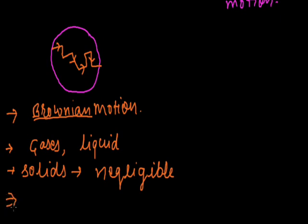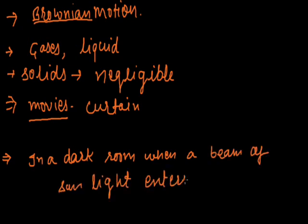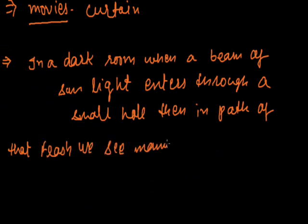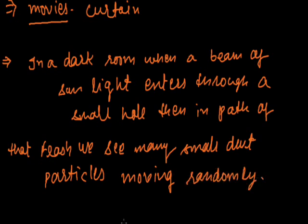I will tell you another example of Brownian motion. When you go to movies, you see there is a beam of light striking on the curtain. In the path of this beam you see many particles moving here and there. This motion is nothing but Brownian motion. Likewise, in a dark room, when a beam of sunlight enters through a small hole, in the path of that flash we see many small dust particles moving randomly. This is nothing but Brownian motion.